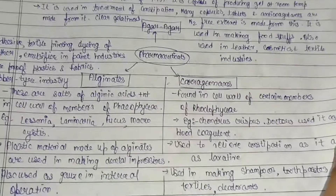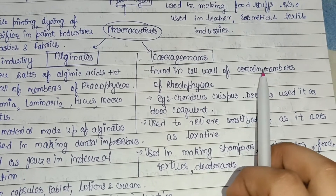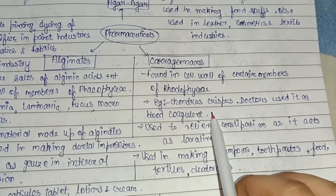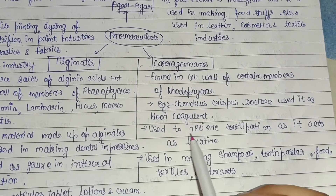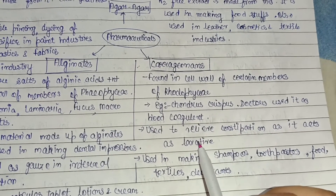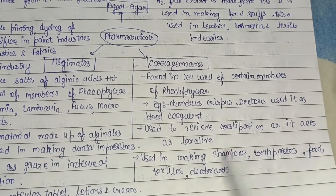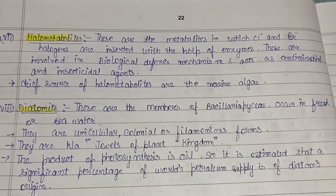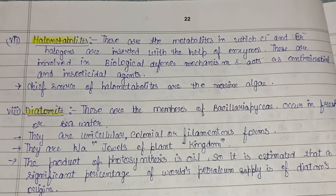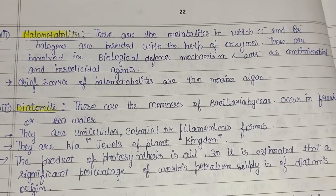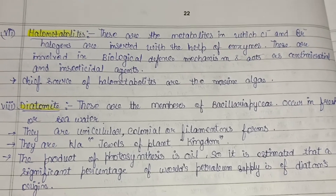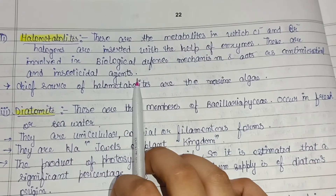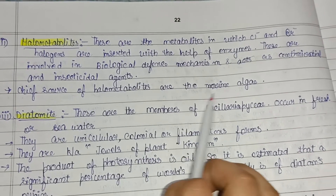Flame-proof plastics and fabrics are also made from alginates, and they hold importance in the rubber and tire industry. Carrageenans are found in the cell wall of certain Rhodophyceae members — example: Chondrus crispus. Doctors use it as a blood coagulant; it relieves constipation and acts as a laxative. It is used in shampoo, toothpaste, food, textile, and deodorants. Halo metabolites — metabolites with chlorine and bromine halogens inserted via enzymes — act as antimicrobial and insecticidal agents; marine algae are a cheap source.